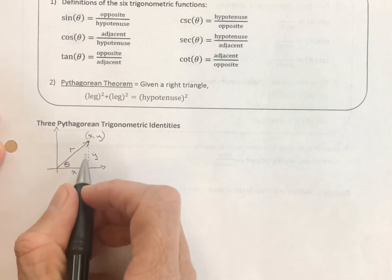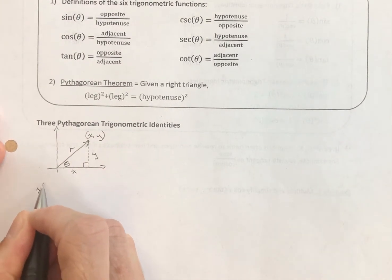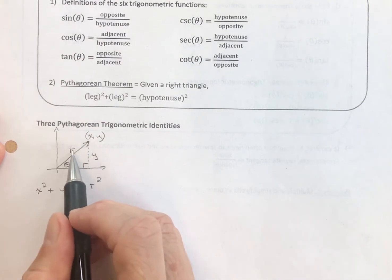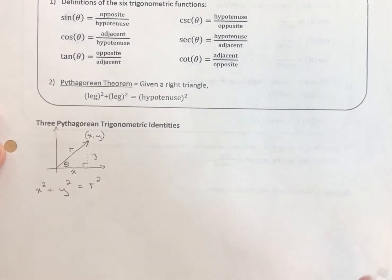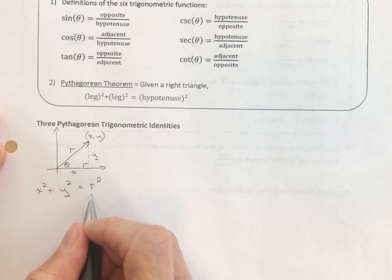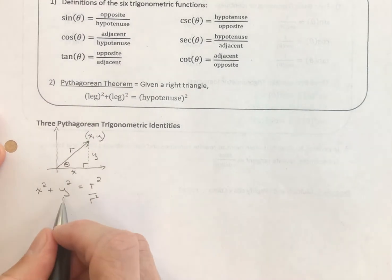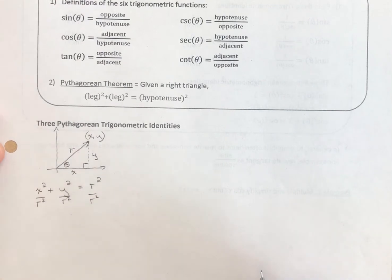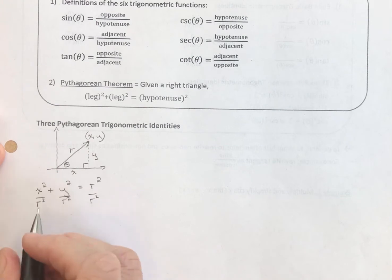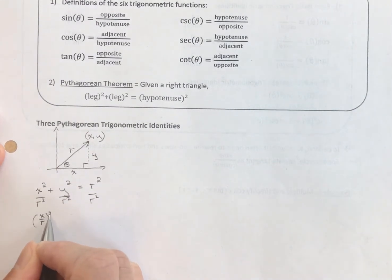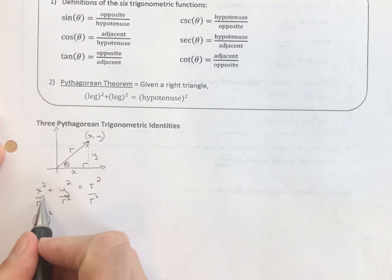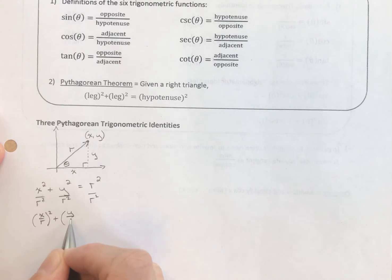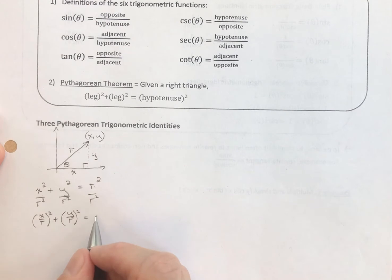This is a right triangle, so we know the Pythagorean theorem: leg squared plus leg squared equals hypotenuse squared. I've identified the legs as x and y and the hypotenuse as r. Now I'm going to divide both sides by r squared — the right side by r squared, and the entire left side by r squared, which means each of the terms is divided by r squared. So this one is going to be x over r, squared. I can rewrite x squared over r squared as (x/r) squared, and y squared over r squared as (y/r) squared. And of course, r squared over r squared is just one.